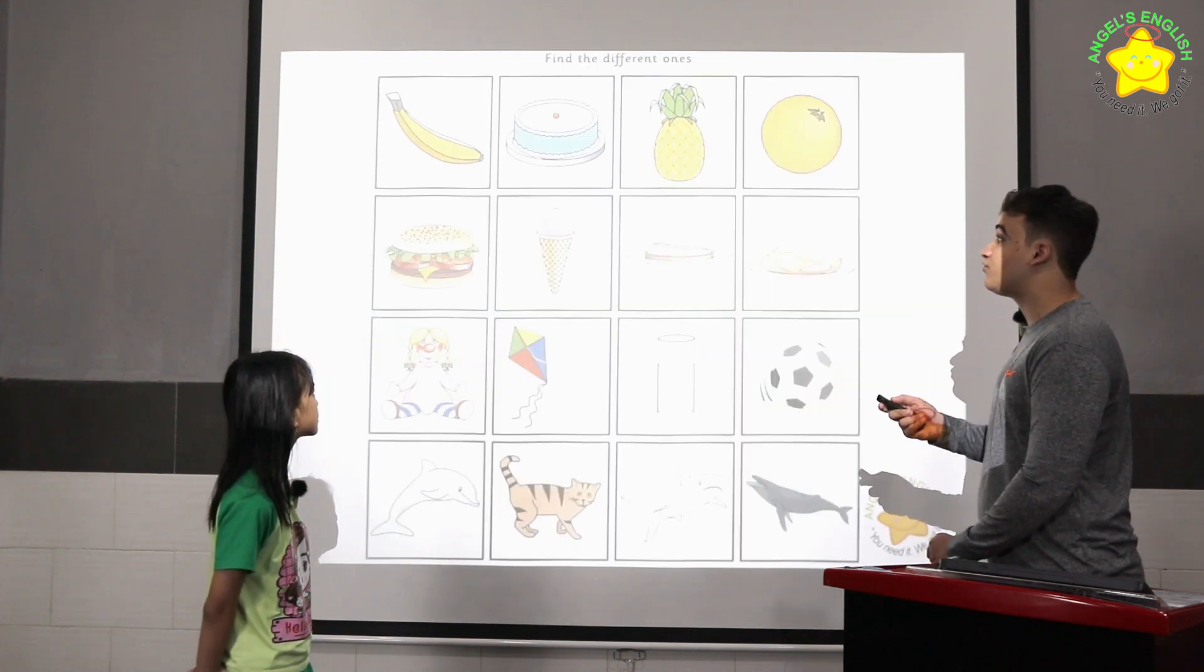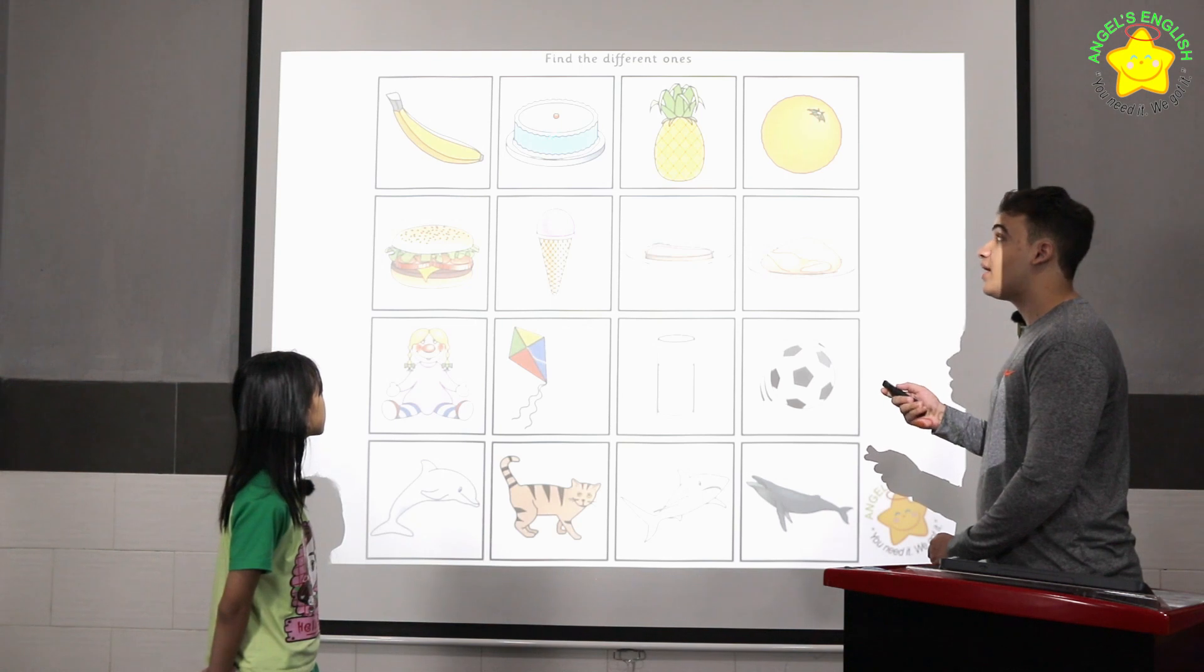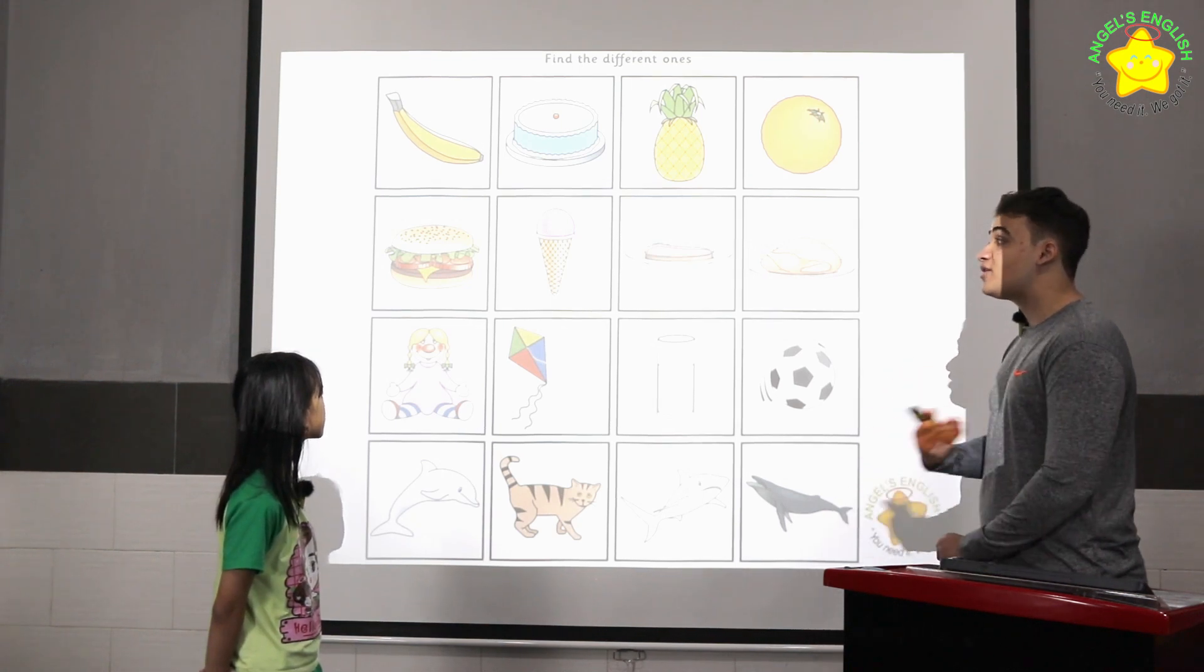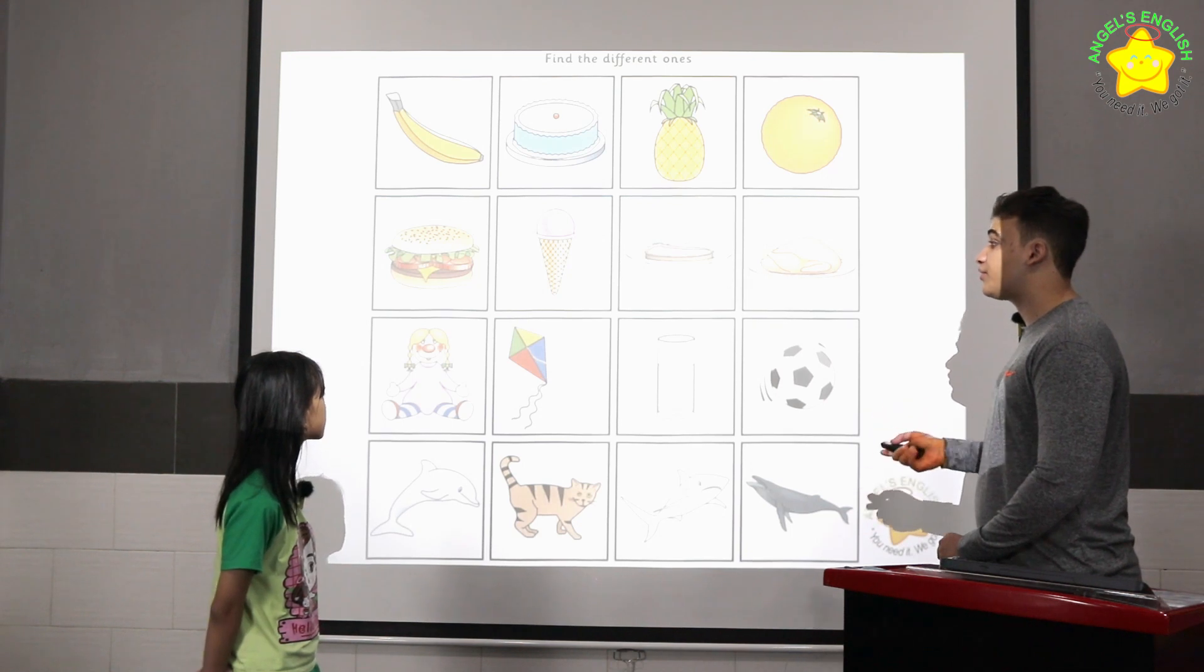All right, let's go find a different one. In row one, the cake is different because the banana, pineapple, and the orange are all fruits. Can you please tell me row two, three, and four?